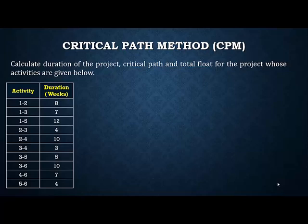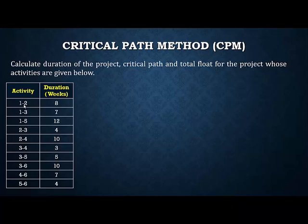Welcome to this lecture on the Critical Path Method. Here we are going to calculate the duration of the project, the critical path, and the total float for individual activities. The project data is given below, where the first column shows the interrelationship between each node. The first activity starts from node 1 and ends at node 2, and it takes 8 weeks to complete.